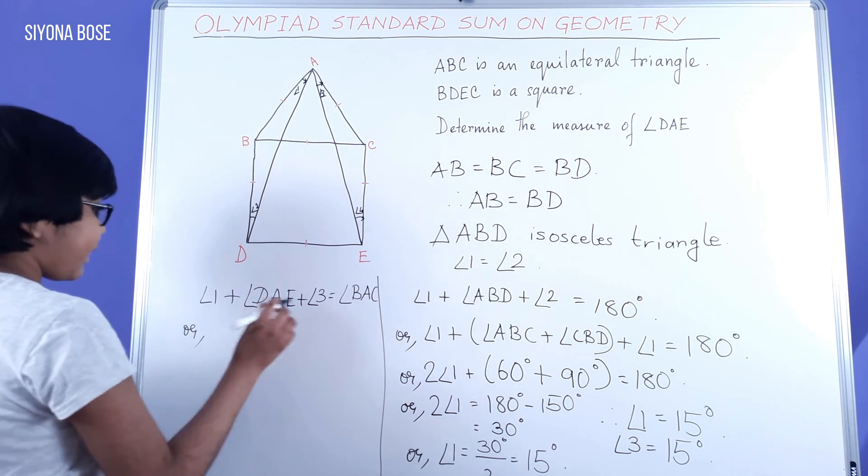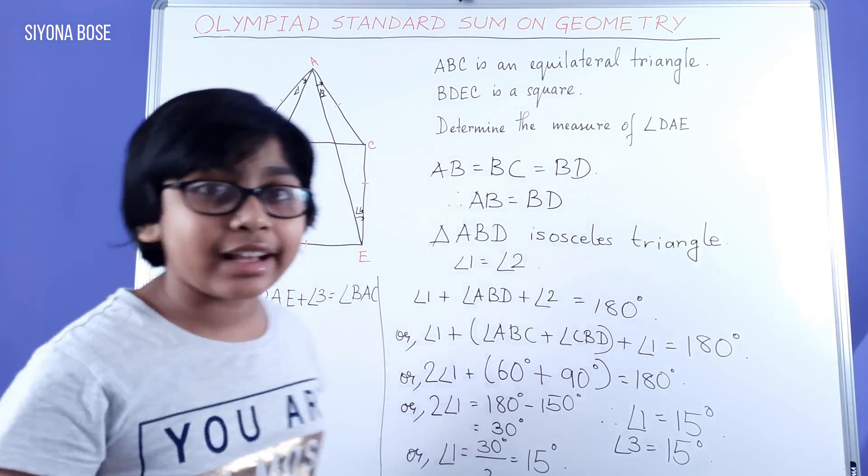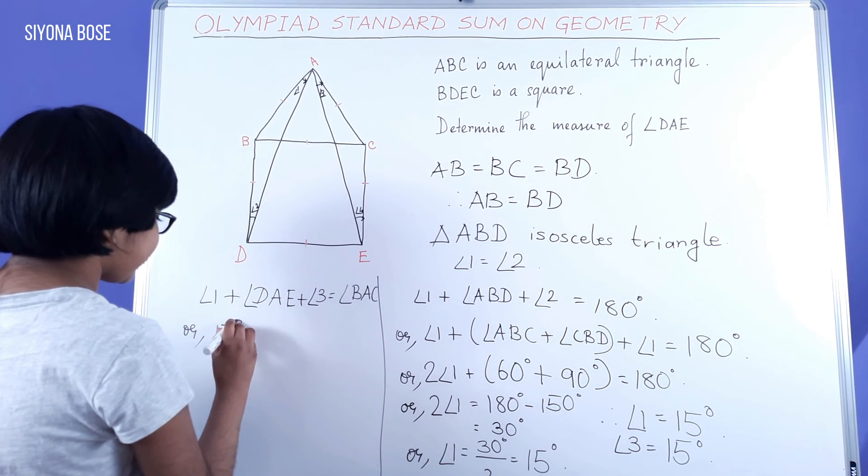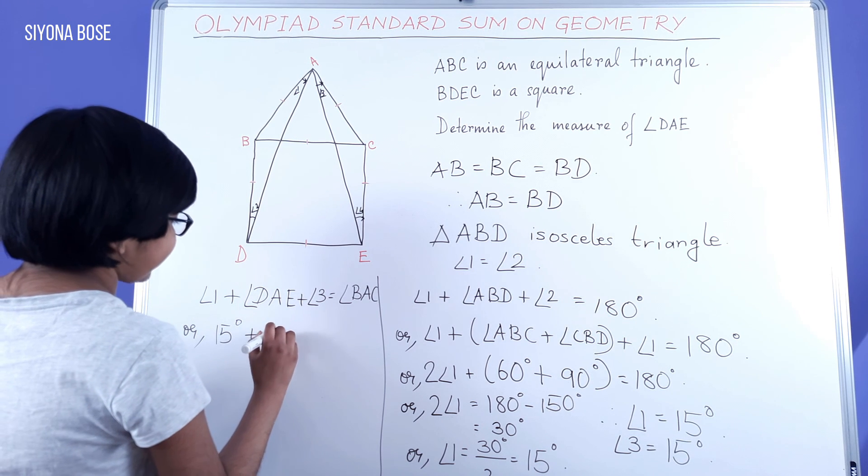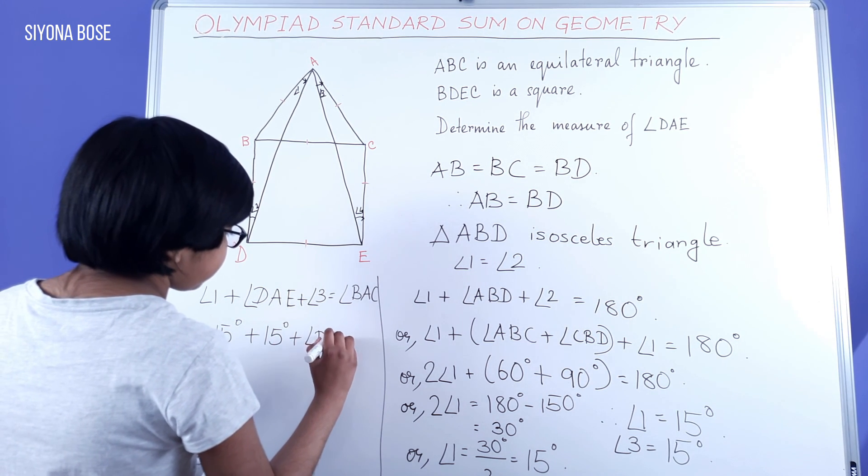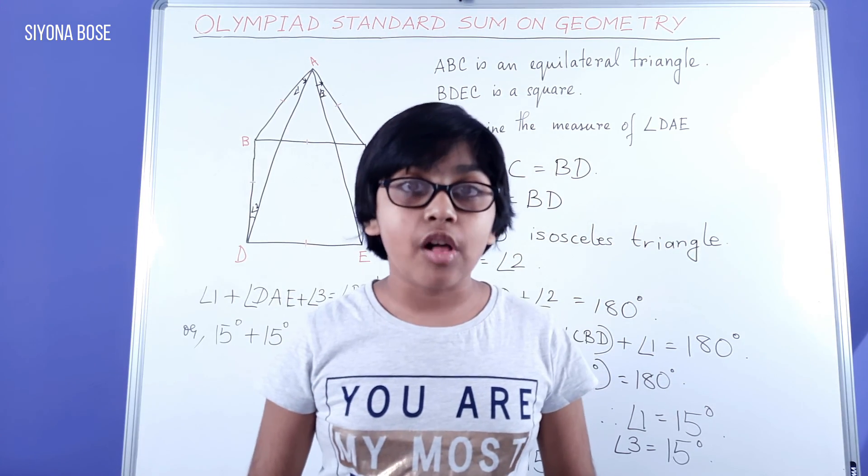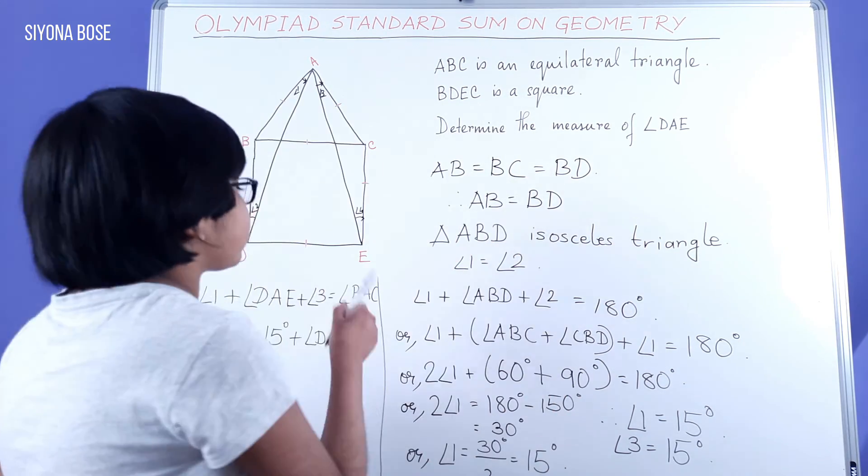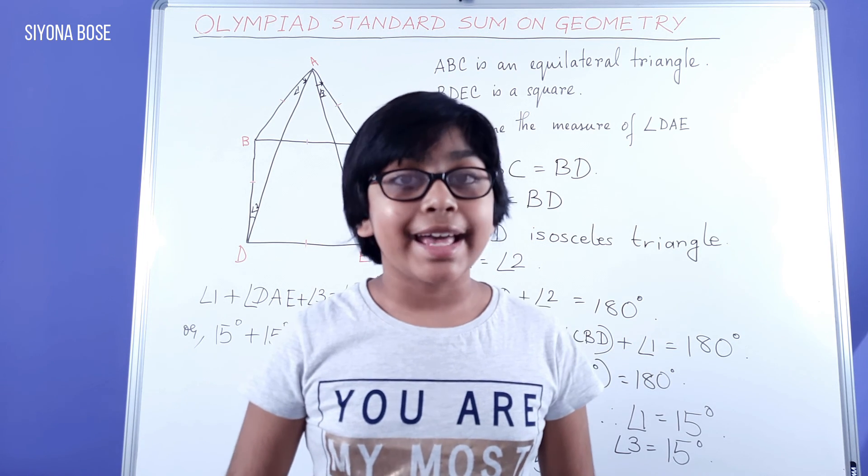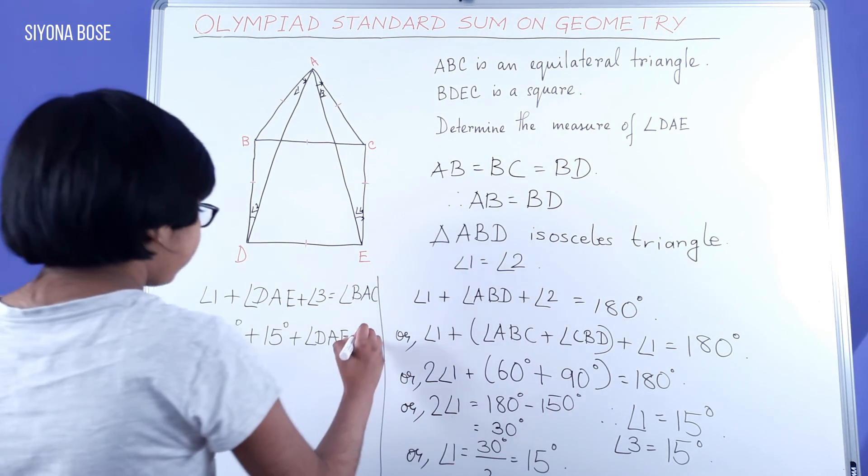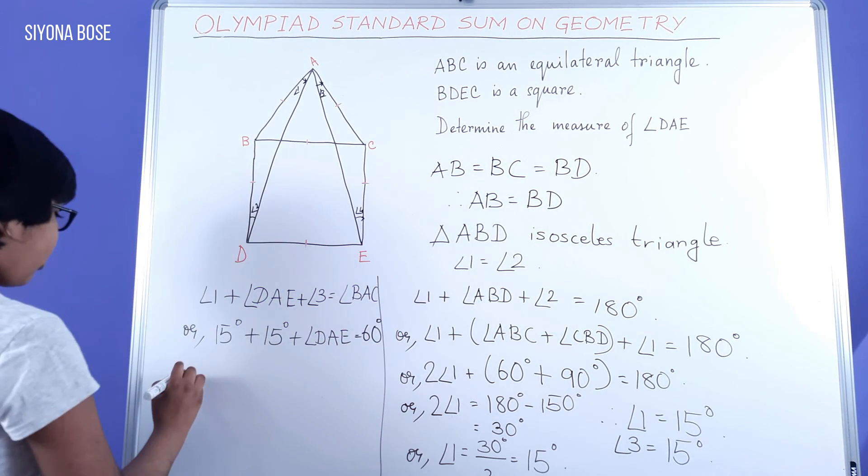Or, since we have these two angle 1 and angle 3 values, we can substitute 15 degrees plus 15 degrees plus angle DAE. And also, since the value of all angles of an equilateral triangle are 60 degrees, hence BAC is also 60 degrees, equal to 60 degrees.